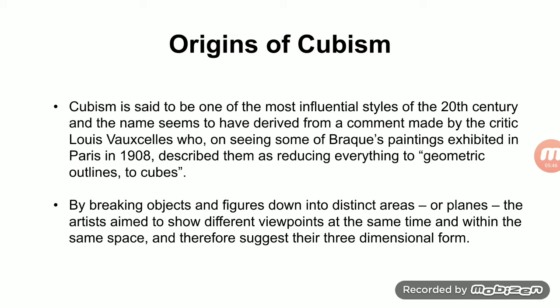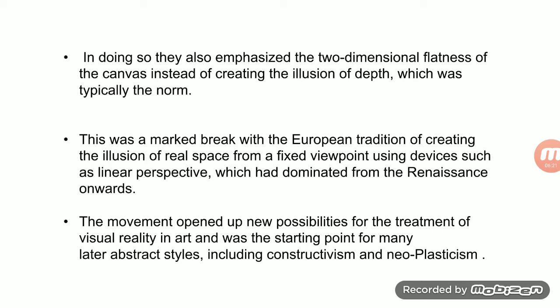Cubism is a movement that breaks objects and figures down into distinct areas. The artists aimed to show different viewpoints at the same time and within the same space on the canvas, suggesting three-dimensional form. Objects were divided into different shapes and viewpoints but shown on the same canvas. In doing so, they also emphasized the two-dimensional flatness of the canvas instead of creating the illusion of depth.